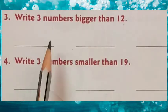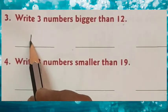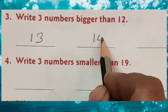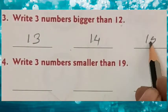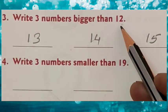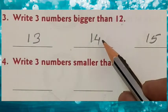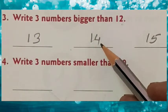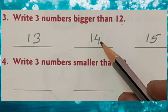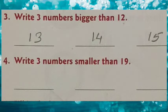For example, after 12 you can write 13, 14, 15 — they are all bigger than 12. Other numbers like 18, 20, 25, 22, 21 — you can write those too.